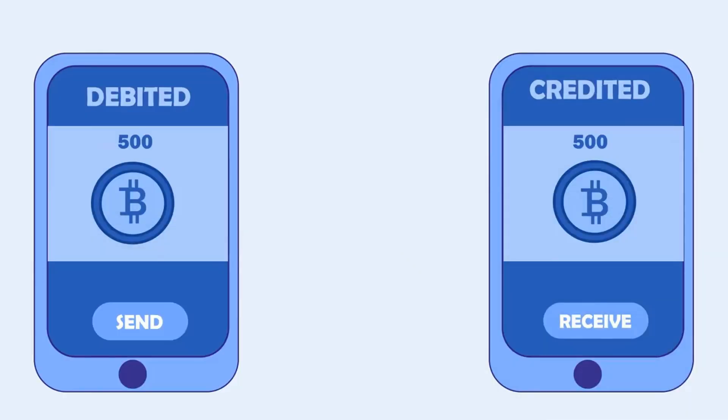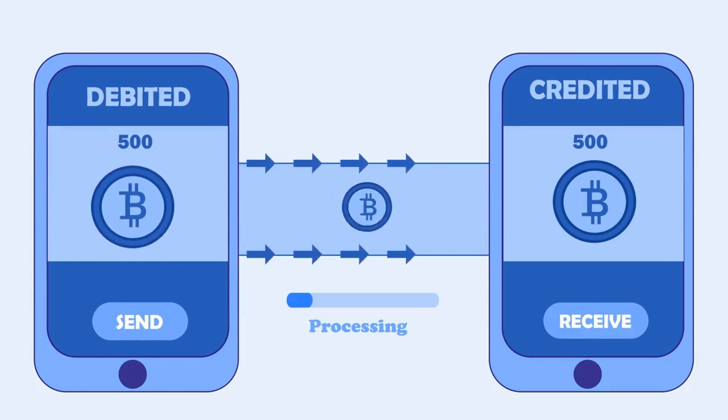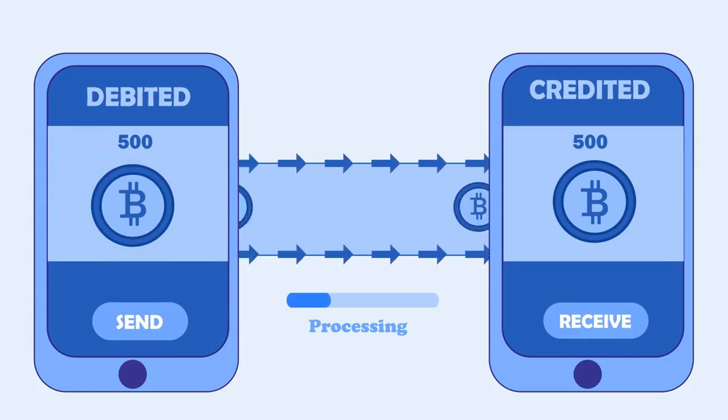On January 12, 2009, Hal received the very first Bitcoin transaction, 10 BTC from Satoshi himself. Talk about making history.